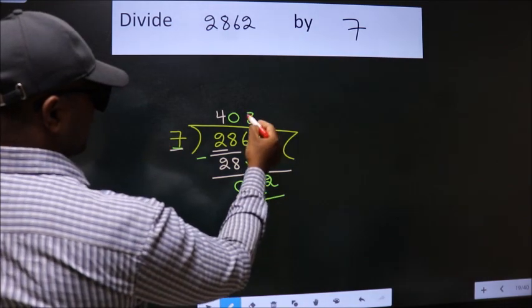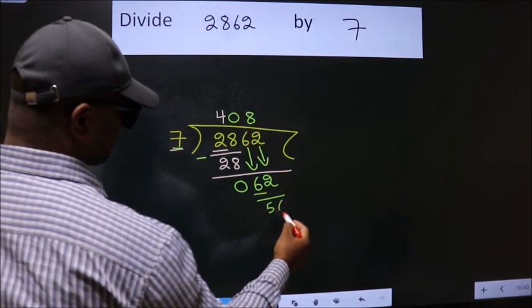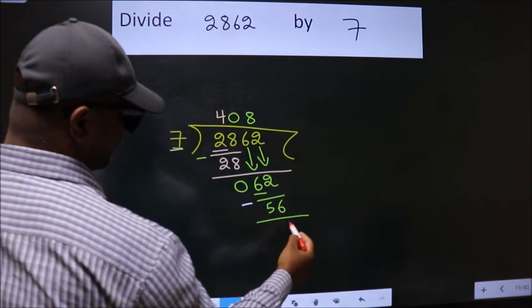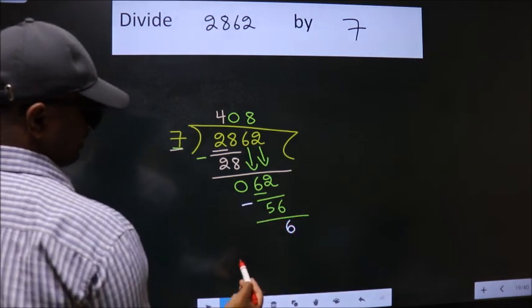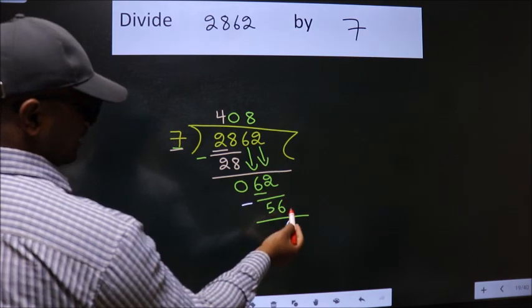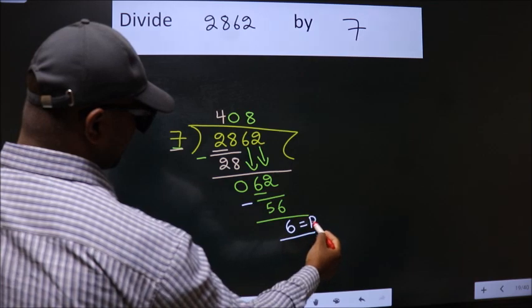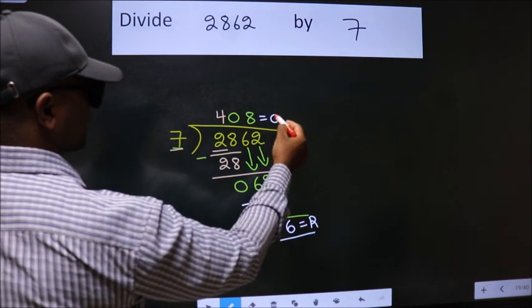7 times 8 is 56. Now we subtract and get 6. No more numbers to bring down, so we stop here. This is our remainder, and this is our quotient.